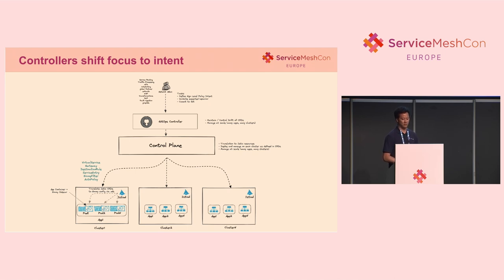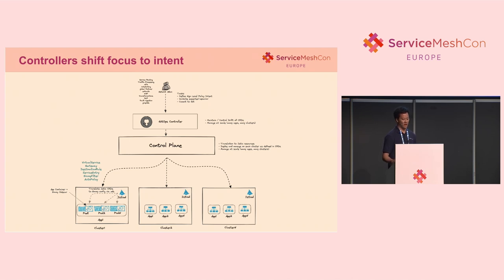The control plane translates Istio resources for us, provided we have a simple-to-use API at the high level. The control plane mapped with GitOps deploys and manages each cluster as defined in our CRDs. Together, GitOps and the control plane allow us to truly manage this at scale.